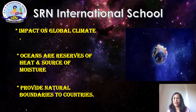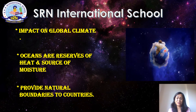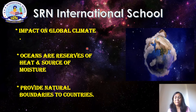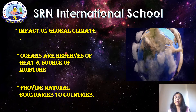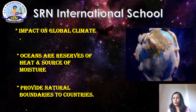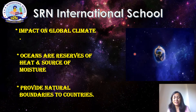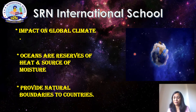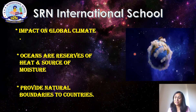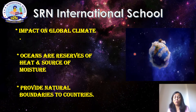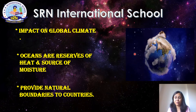Now, there are certain benefits of the huge water bodies, that is seas and oceans. They have an impact on the global climate of the earth. Oceans are great reserves of heat because they are huge water bodies and water takes much more time to get heated up compared to land. That is why cities which are closer to the oceans have a moderate climate compared to those which are far away.